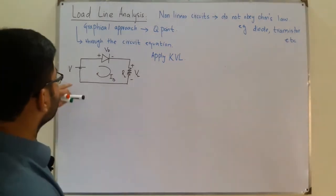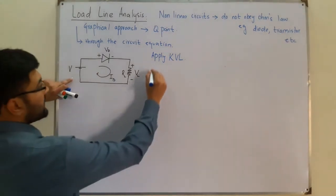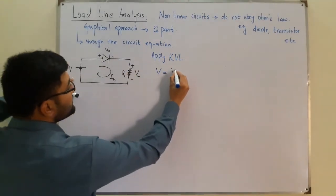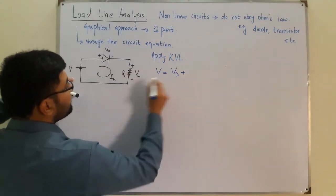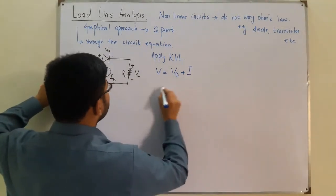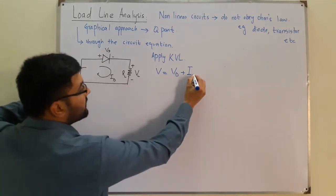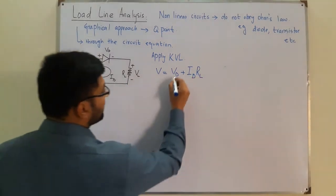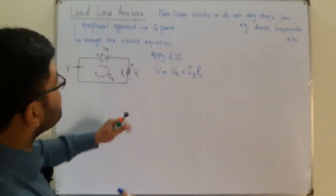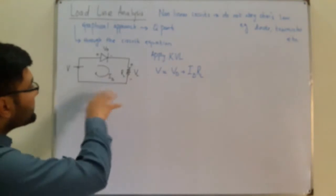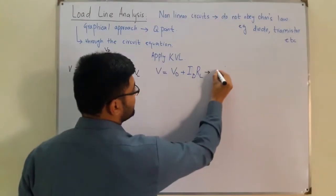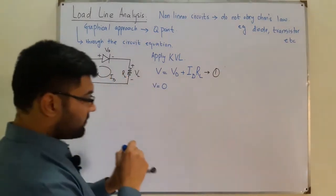Now apply Kirchhoff's Voltage Law. V is a voltage rise and the other two are voltage drops, so: V = VD + VL, and since VL = ID × RL, we get V = VD + ID × RL. This is the circuit equation — call it equation number one.